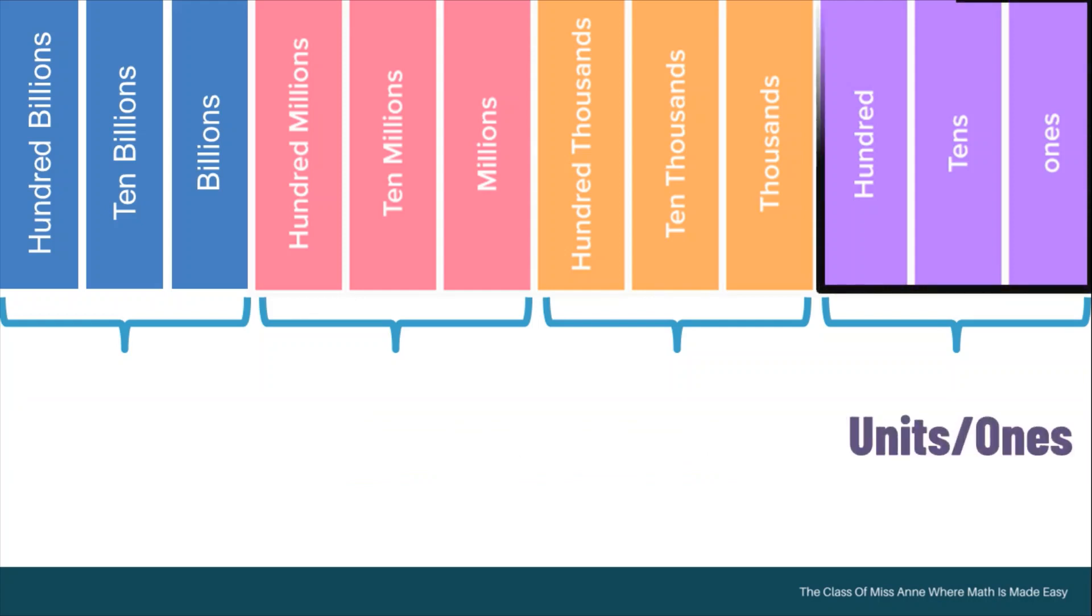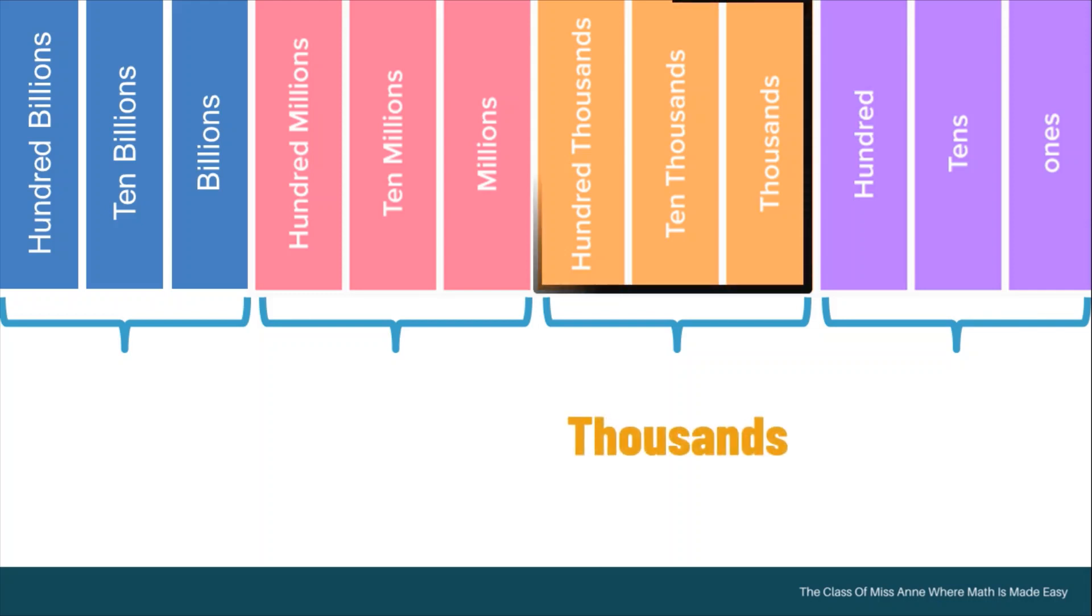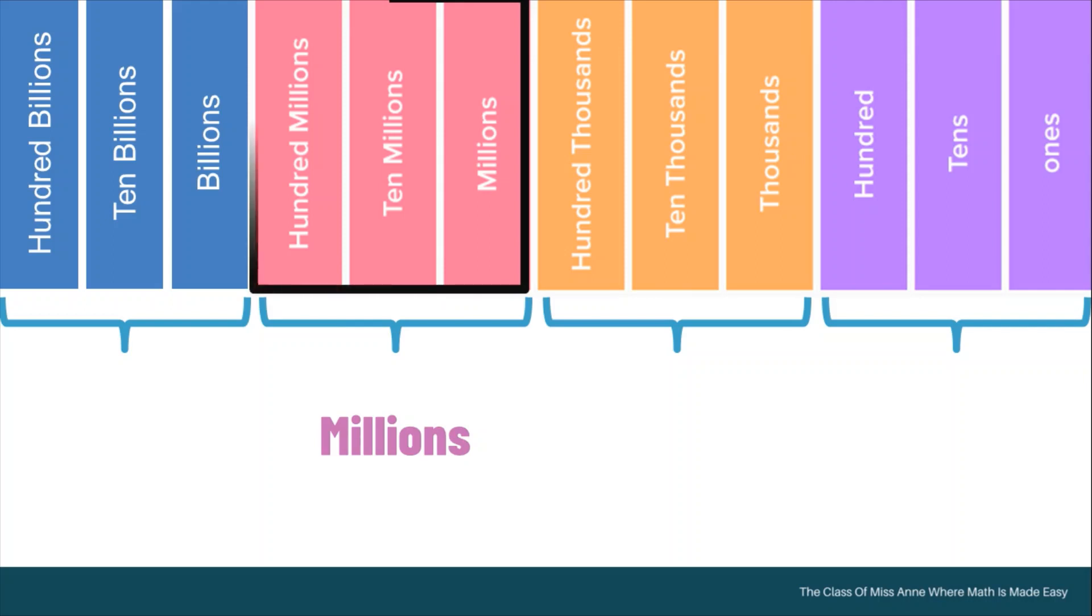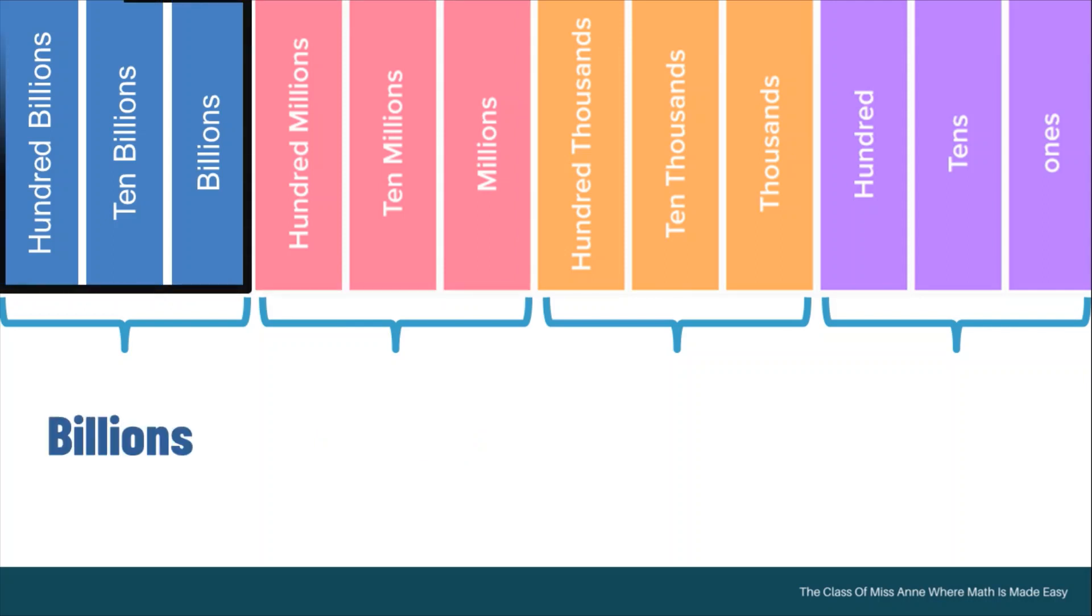We have the ones or units period. We have the thousands period. We have the millions period. We have the billions period. Remember that the place value chart does not end here.